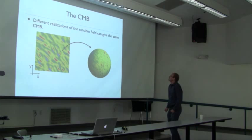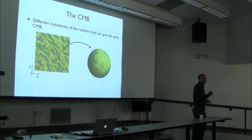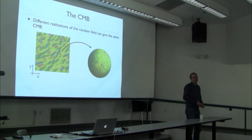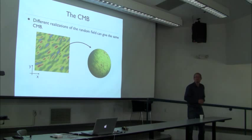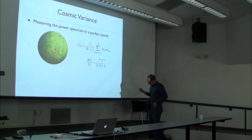One thing to keep in mind: if I just have this single 2D projection, I can get tricked. I don't really know what the actual underlying density fluctuations are, because different realizations can give me the same exact projection. There are different three-dimensional fields that will give me the same two-dimensional prediction.